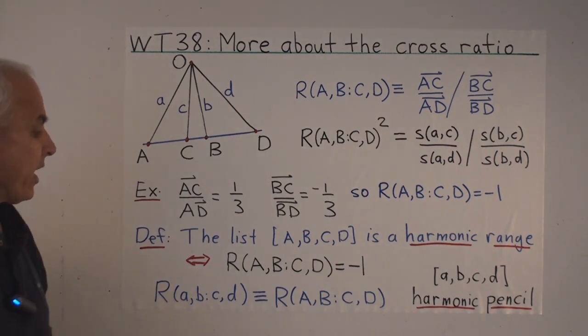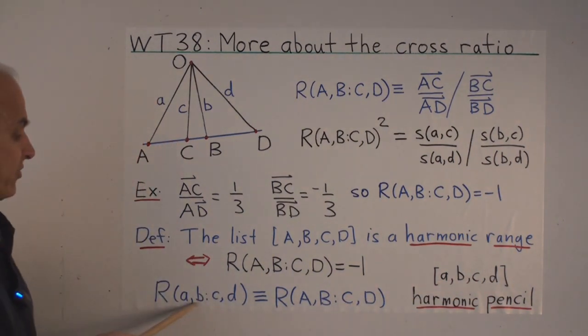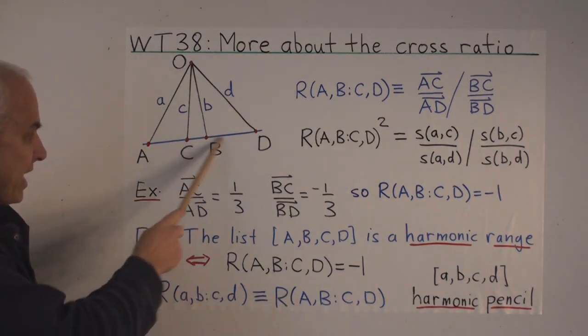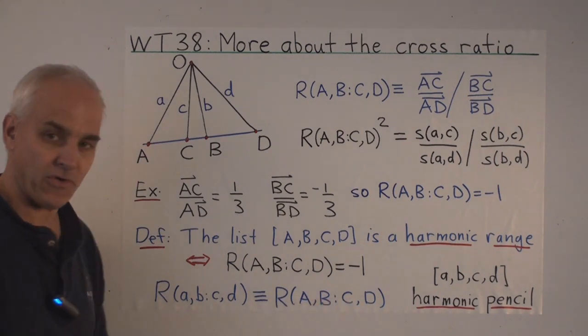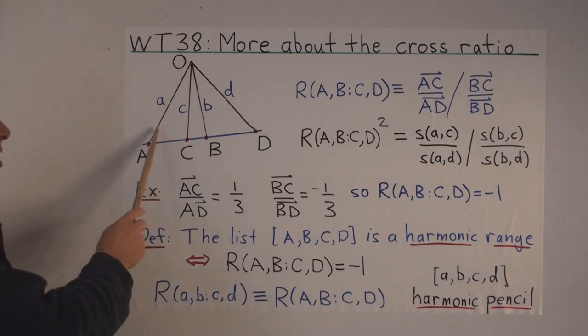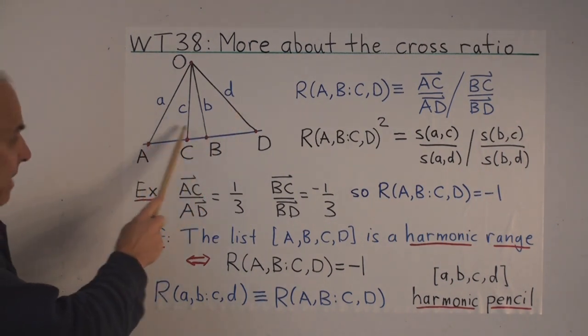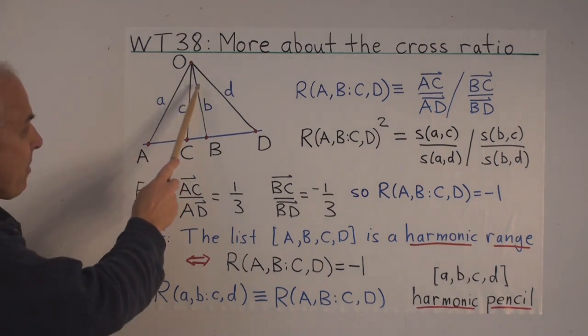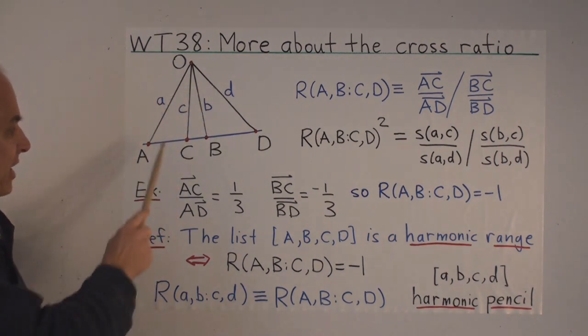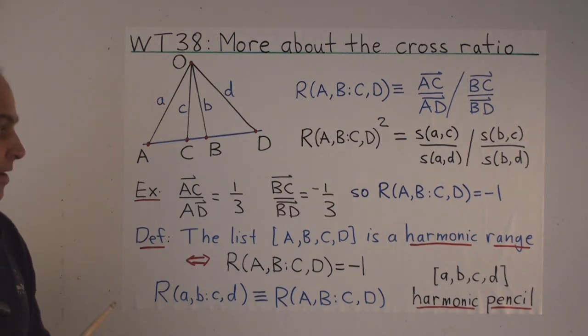So in a similar way, we can say that if we have four lines A, B, C, D, and their cross-ratio, which is defined exactly this way to be the cross-ratio of the corresponding four points, that's a harmonic pencil if that cross-ratio is equal to minus one. So this would be an example of a harmonic pencil of lines because the cross-ratio of those four lines is minus one.